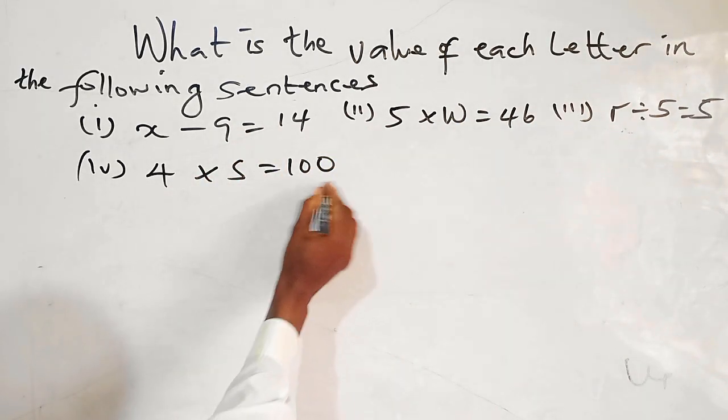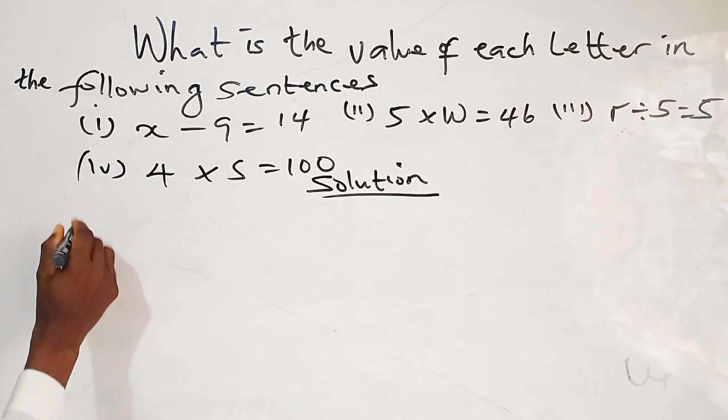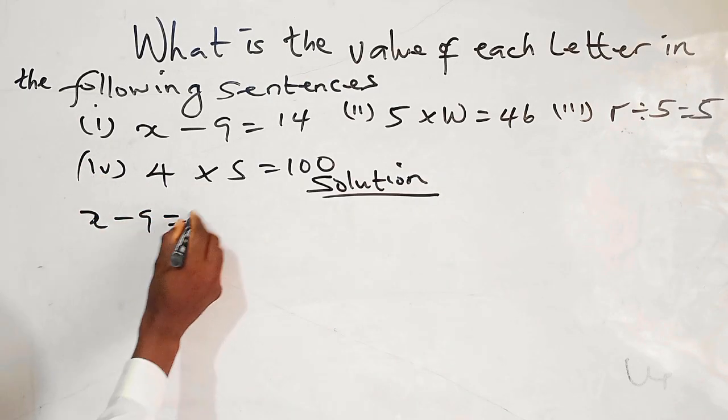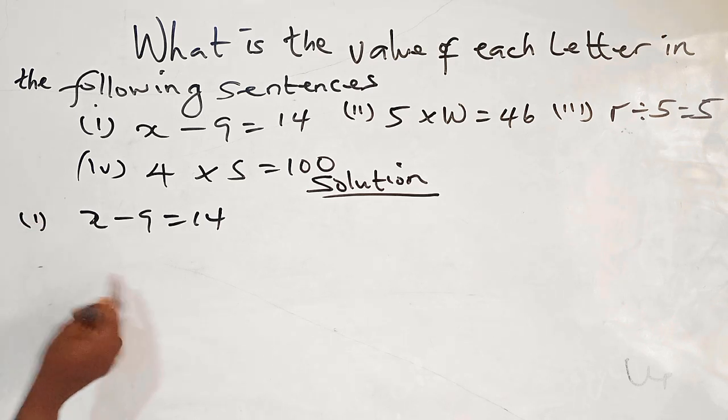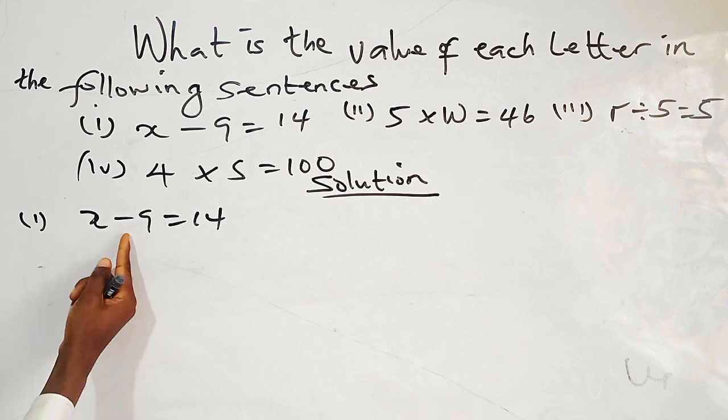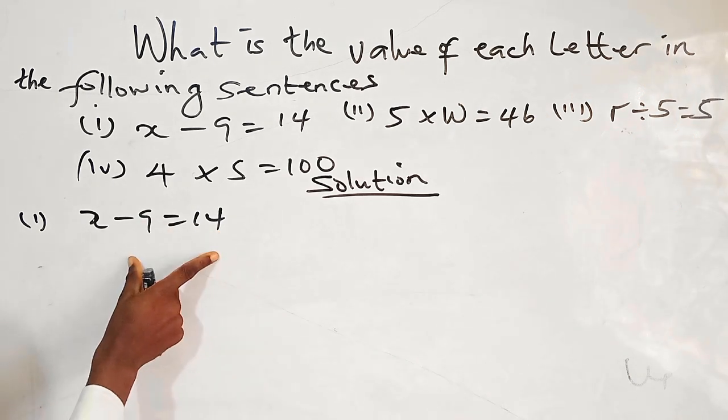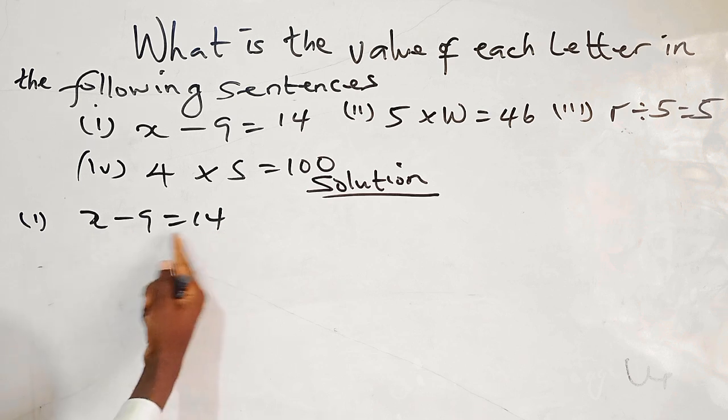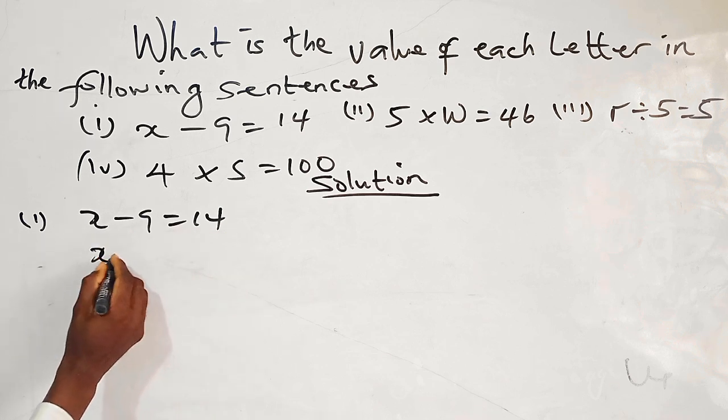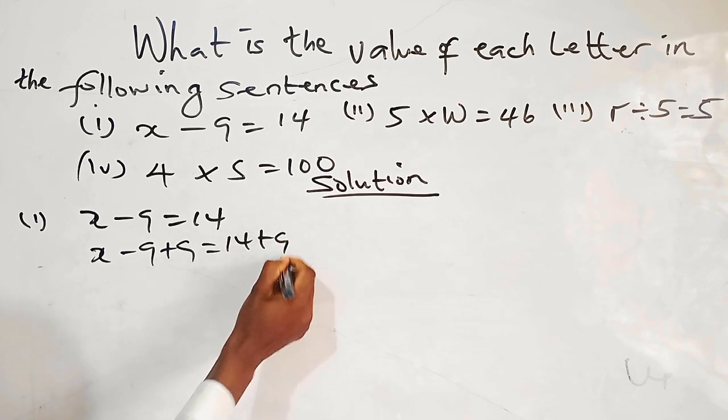Okay, so we have solution. For the first one, we have X minus 9 equals 14. So when we look at the left side of the equation, what do we subtract 9 from that will give us 14? So we can easily do it this way. Since we have minus 9, we can add 9 to both sides. So we have X minus 9 plus 9 equals 14 plus 9.